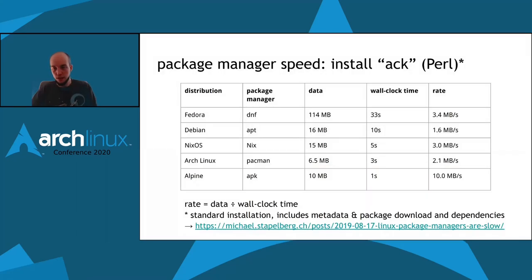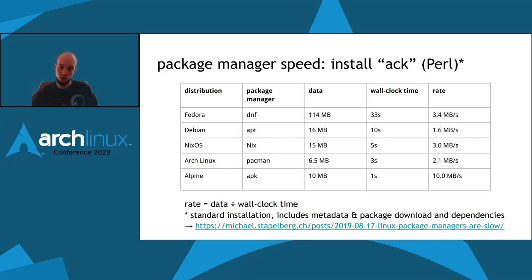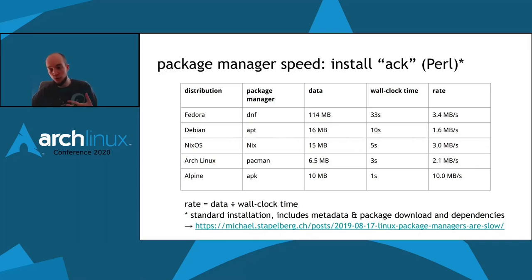Let's look at existing distributions' package managers and how they fare in terms of installation speed. We already looked at Arch Linux, where it takes a little under three seconds to install the ACK program. Other distributions come in usually slower, except for Alpine at just one second. Then we see NixOS at five seconds, Debian at 10 seconds, and in Fedora we need to wait over half a minute to install a couple of kilobytes of Perl — and the metadata alone is 114 megabytes. The resulting data rates are abysmal; even Alpine's 10 megabytes per second is not close to any bottleneck in a modern system.